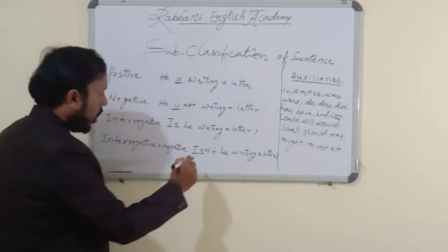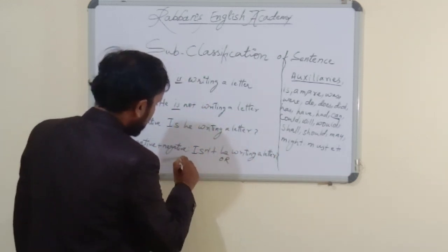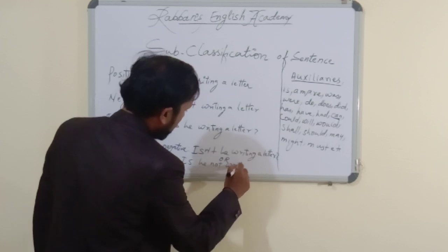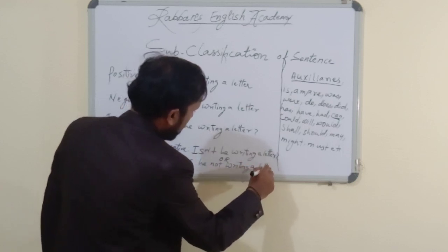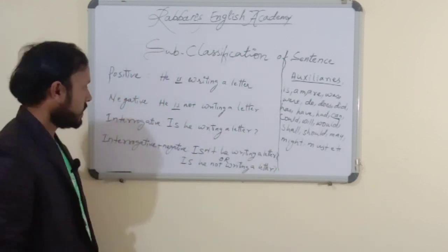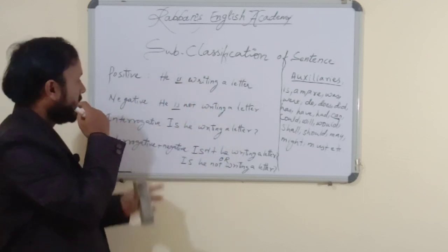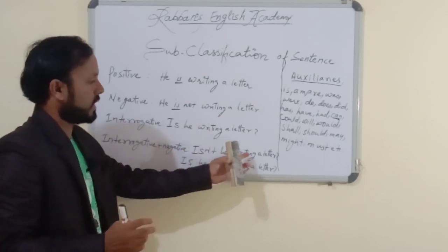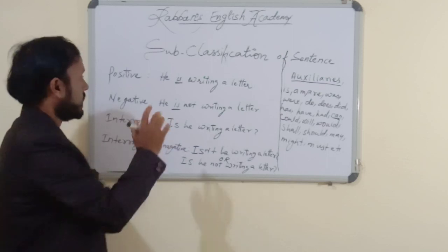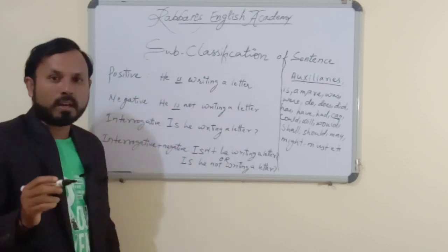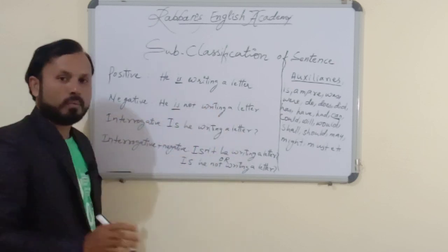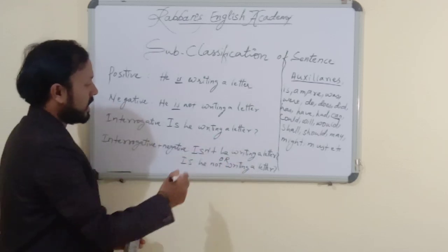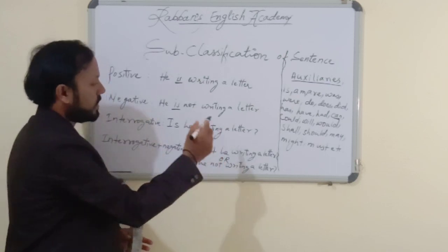And question mark. So: Positive — 'He is writing a letter.' Negative — 'He is not writing a letter.' Interrogative — 'Is he writing a letter?' Interrogative negative — 'Isn't he writing a letter?' Or: 'Is he not writing a letter?' In Hindi translations: 'He is writing a letter.' 'He is not writing a letter.' 'Is he writing a letter?' 'Is he not writing a letter?' Or 'Isn't he writing a letter?'